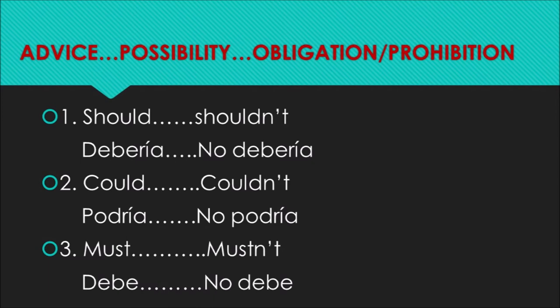Esto es cuando uno aconseja a alguien. Tú deberías ponerte al día — es un consejo. Tú no deberías dejar pasar tanto el tiempo antes de ponerte a trabajar en tus asignaturas — son consejos. Should es afirmativo, shouldn't es negativo. Number two: could / couldn't — podría / no podría. Son posibilidades.